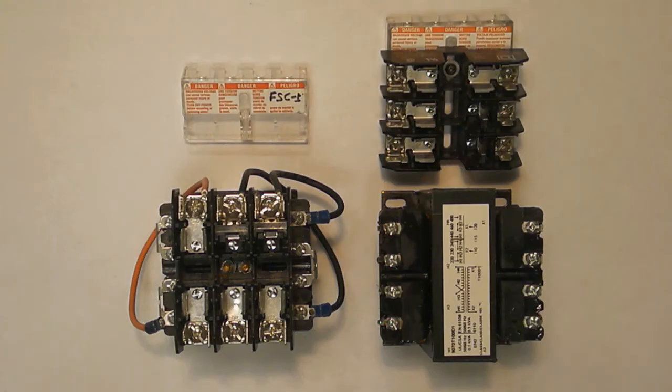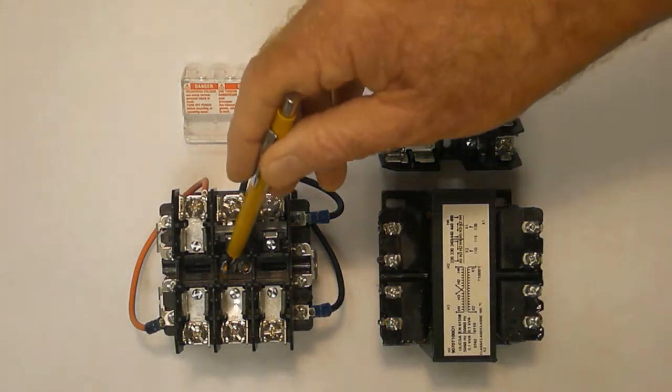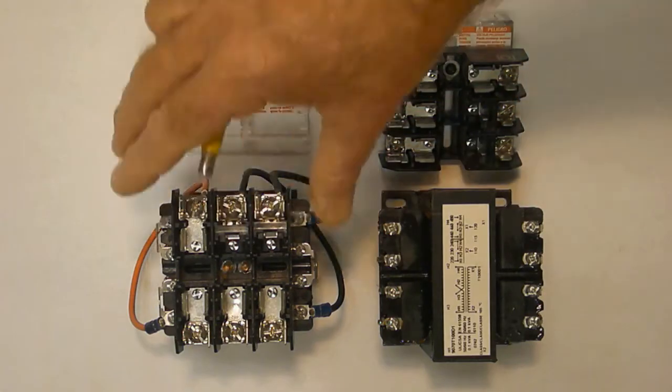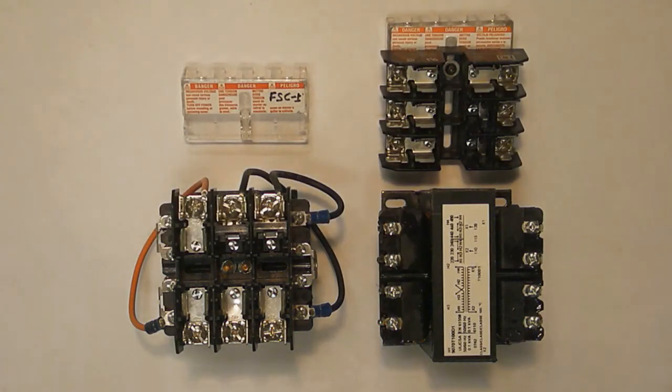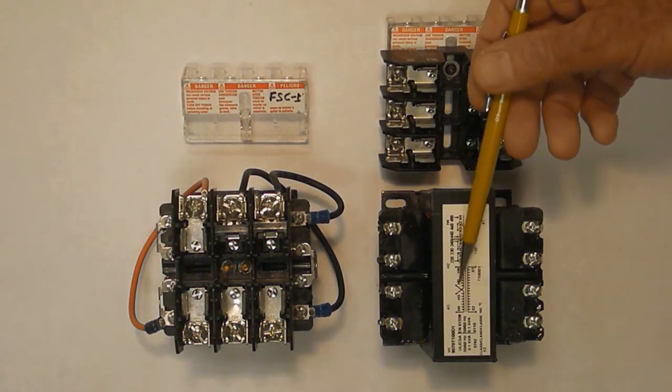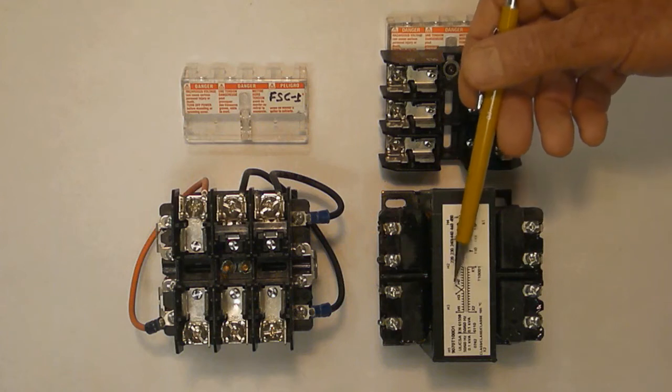The factory installation uses two red studs to hold the fuse block in place, making for a very solid assembly. The one on the right is a more common T type transformer, without a fuse block or studs on top to mount one.